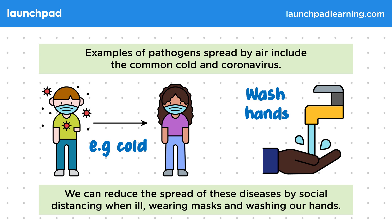In addition to describing pathogens as capable of spreading by air, we also need to describe the ways in which the spread can be reduced or prevented. For example: limiting contacts, wearing masks, washing our hands, having good ventilation, and socially distancing.